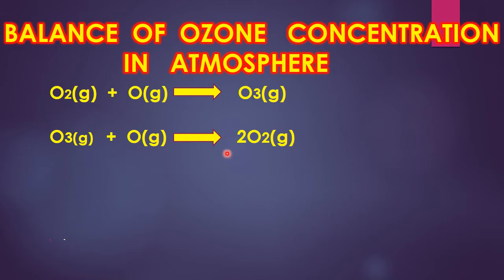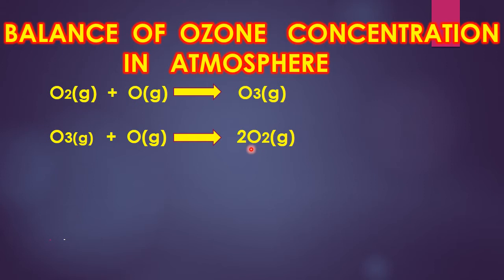Under normal conditions, ozone concentration in the stratosphere remains nearly constant through a series of complex atmospheric reactions. Two reactions maintain this balance: first, an oxygen molecule reacts with atomic oxygen to produce ozone; second, ozone reacts with atomic oxygen to produce two molecules of oxygen. This interconversion of oxygen molecules into ozone and back is a continuous reaction occurring in the stratosphere.